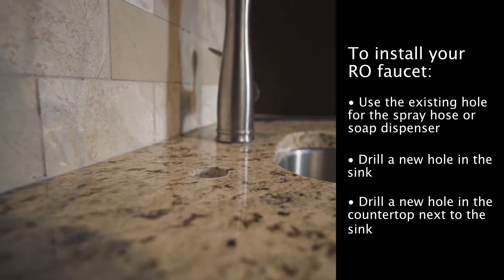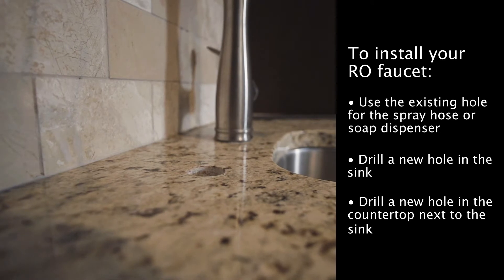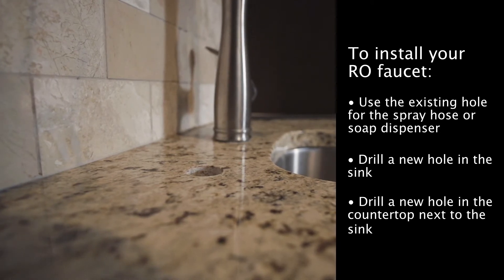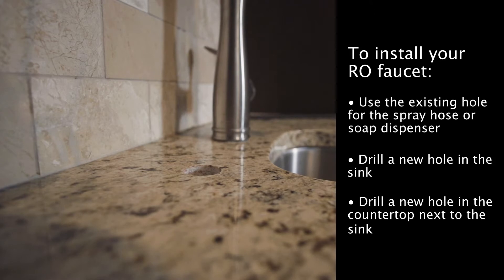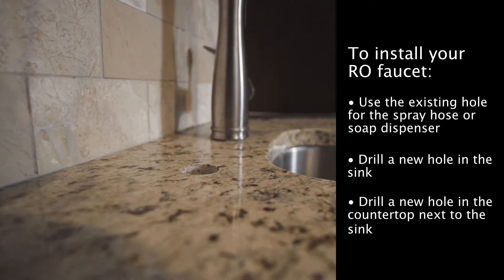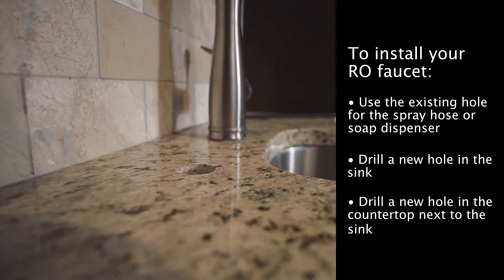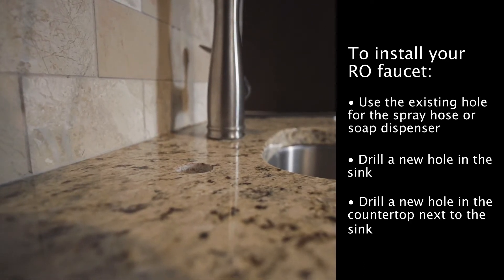Before you get to connecting the RO system components, you need to prepare a spot for RO faucet installation. This can be done in one of three ways. One, use the existing hole for the spray hose or soap dispenser. Two, drill a new hole in the sink. Or three, drill a new hole in the countertop next to the sink. For this install, a certified professional has already drilled a one and a quarter inch hole in our granite countertop which we'll use.